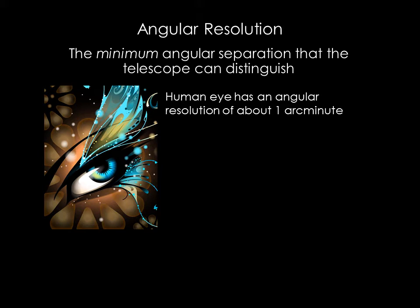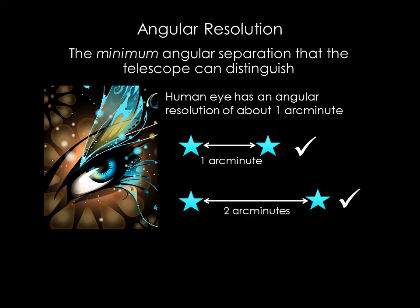Angular resolution is the smallest angle over which we can tell that two dots or two stars are distinct. The human eye has an angular resolution of about one arc minute. This means that two stars appear distinct only if they are separated by at least an arc minute in the sky. If they are separated by less than an arc minute, our eyes will not be able to distinguish them individually and they will look like a single star.